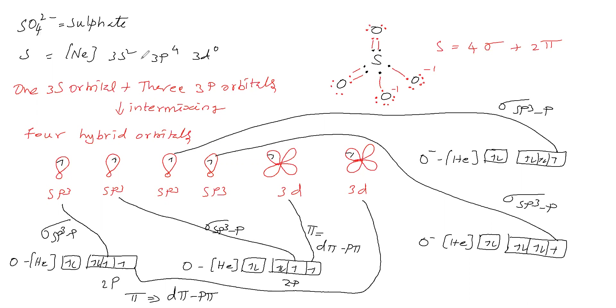In sulfate, sulfur is the central atom and undergoes sp³ hybridization. Therefore, SO₄²⁻ has a tetrahedral shape.